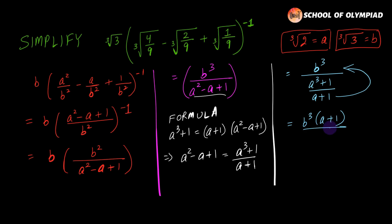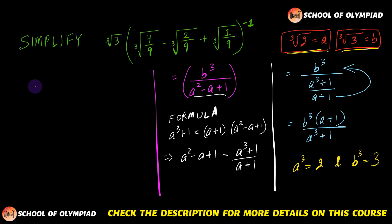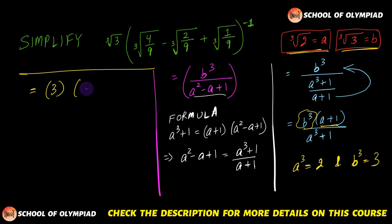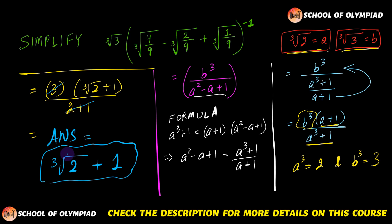Now we simply substitute the values. Since a equals cube root of 2, a³ equals 2. Since b equals cube root of 3, b³ equals 3. So the expression becomes 3 multiplied by (cube root of 2 + 1), divided by (2 + 1). Since 2 + 1 equals 3, these quantities cancel, and our final answer is cube root of 2 plus 1. I hope you have understood everything taught in this video. Thank you.